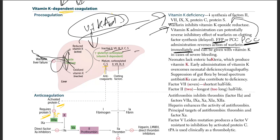So while you're waiting for vitamin K to work, which is a delayed type, you also give fresh frozen plasma or PCC so it works immediately. This is done in cases of severe bleeding.